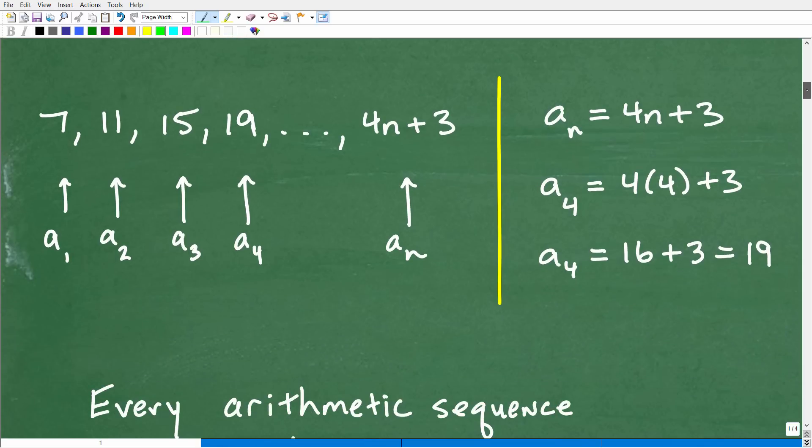Alright, so let's go ahead and get into this. And first things first, let's get some basic notation down. So the first term in a sequence, we use this notation right here. It's a sub 1. So a sub 1 is basically just identifies the first term in a sequence, whether it's a geometric or arithmetic sequence. The second term is a sub 2. That's, of course, 11. And a sub 3 is 15. A sub 4 is 19 and so forth.